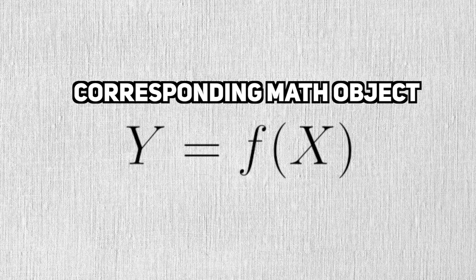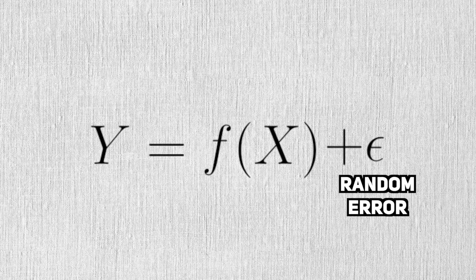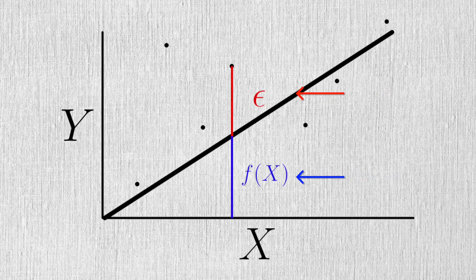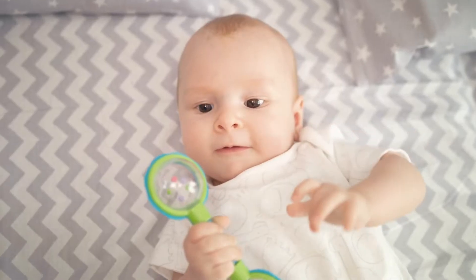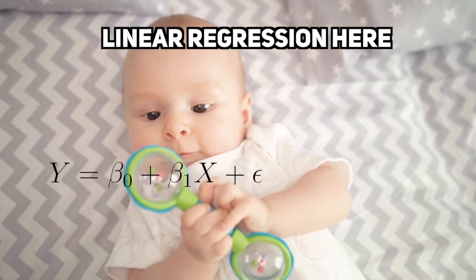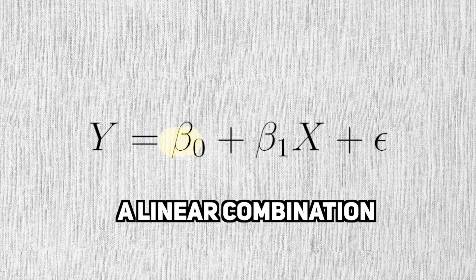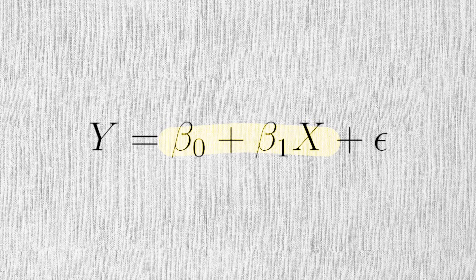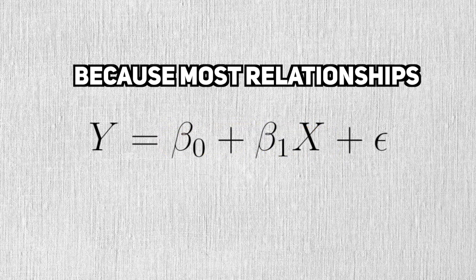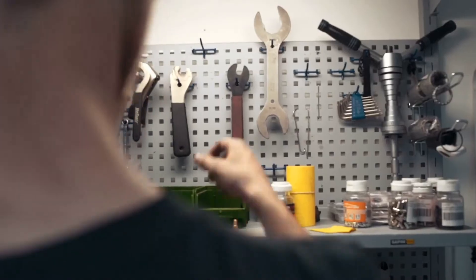These relationships are known as regressions. If there's a relationship between x and y, then the corresponding math object would be a function. No relationship is perfect, so we add some random error to fill in the gap between the function and the actual value. The first regression that people learn about is linear regression, where the function is just a linear combination.